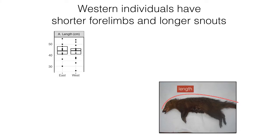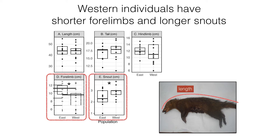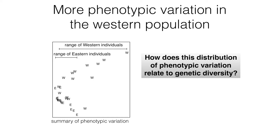Bukula bought animals from hunters in two different parts of Nigeria. Nigeria is split by the River Niger, which runs down through the country and divides the sampling region into west and east. She compared individuals from either side of the river and measured them — their length, tail length, hind limb length, forelimb length, and snout length. She observed that only two of those five measurements differed between west and east: forelimb length and snout length. We captured all this variation into a single measurement of phenotypic variation, and found more variation in the west than the east.